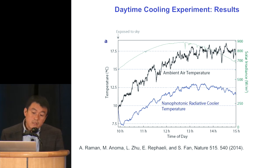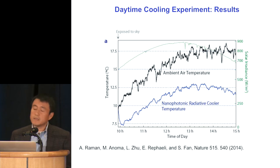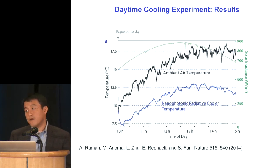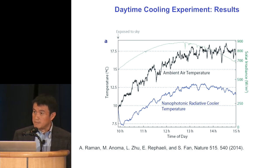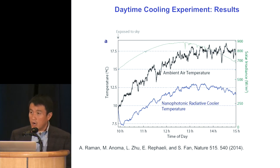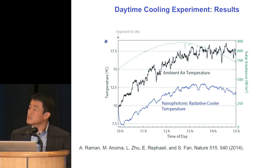One of the interesting questions about these systems is: what exactly is the limit of performance? In this case, the limit really is the sky. We know the universe itself is as cold as 3 Kelvin, so theoretically, if you had a perfectly transmitting atmospheric window, you should be able to get down to 3 Kelvin. More realistically, based on the transmission spectrum at Stanford, you should get a temperature somewhere on the order of 60 to 80 degrees Celsius below the ambient air temperature.